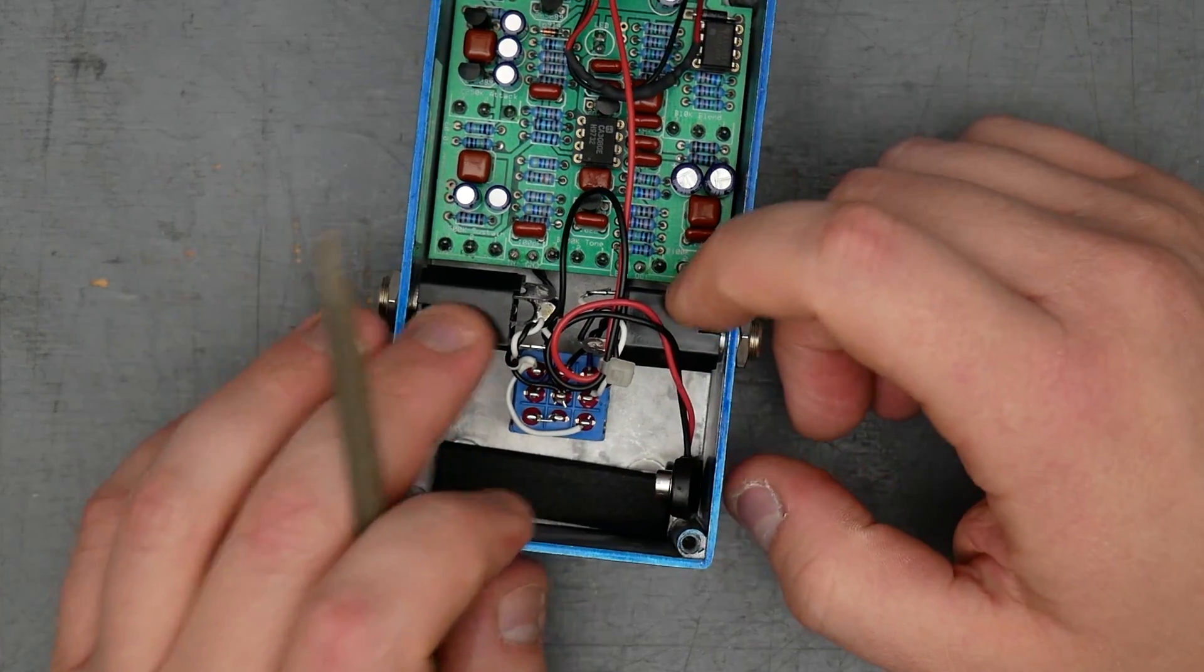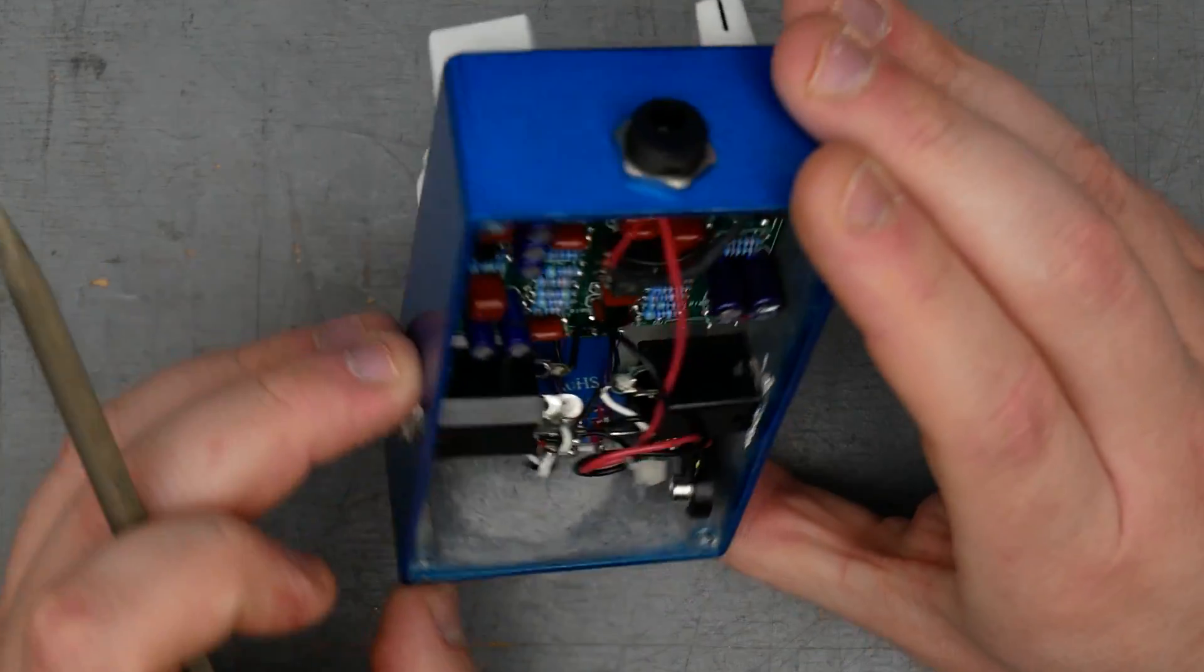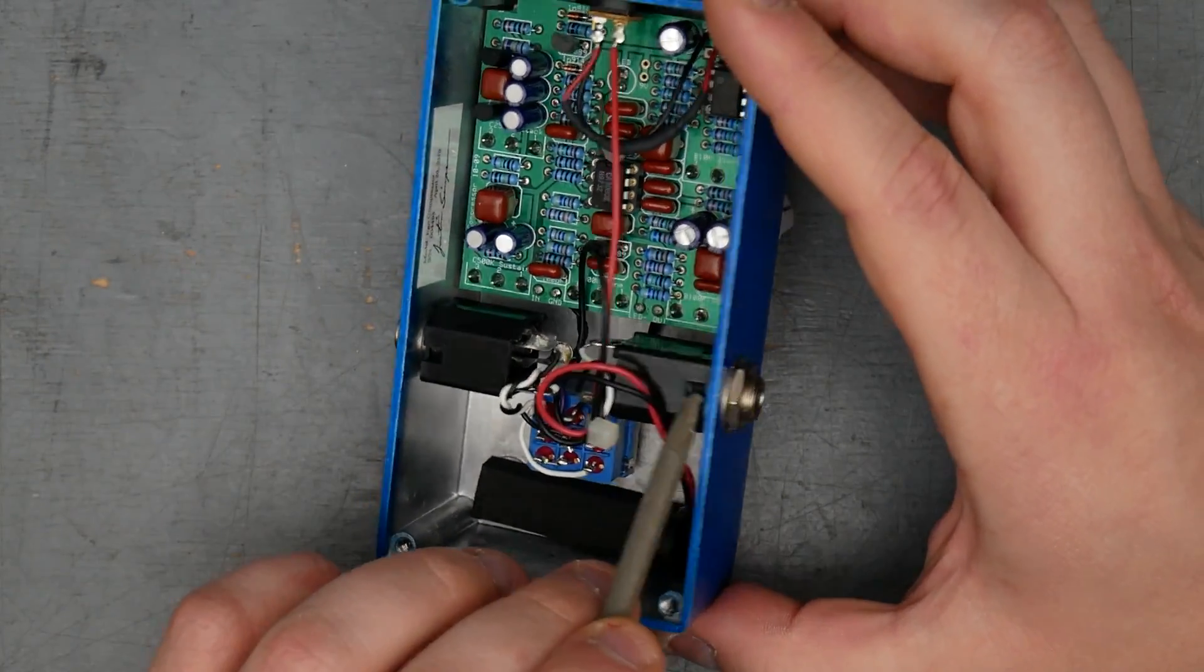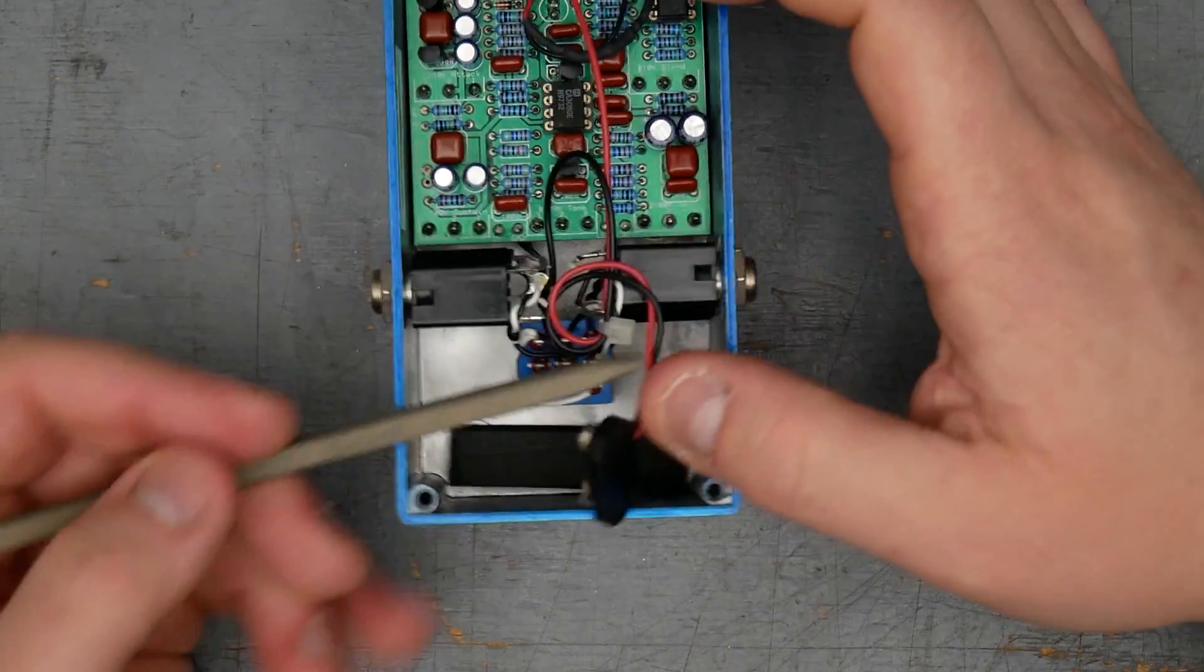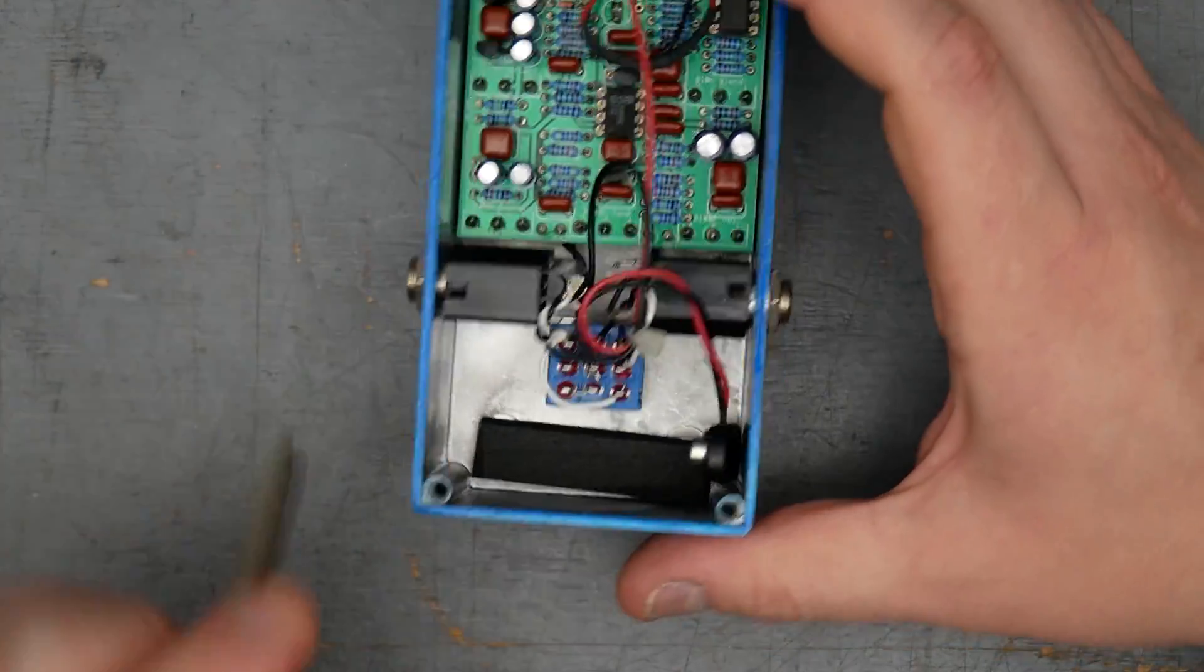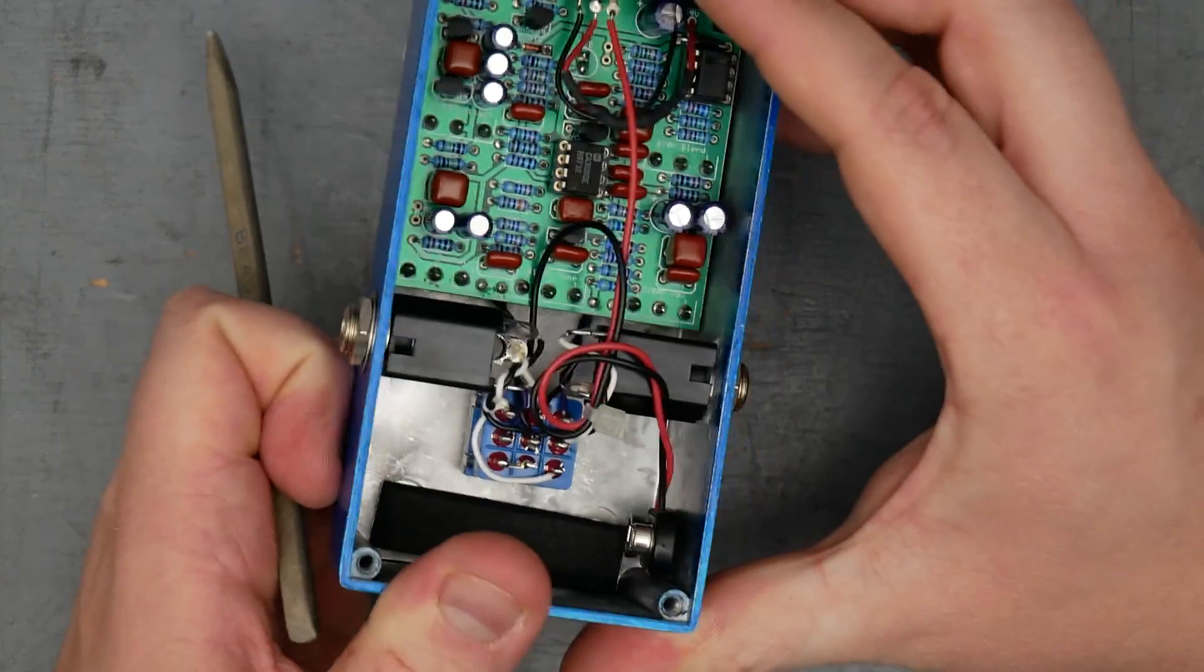Quarter inch jacks look like the Switchcraft 112BX style. The part number might be different if it's not stereo. This is a mono jack for the output, which is what you'd expect because that is not going to be turning on and off the battery snap, whereas the input jack is a stereo jack. But they both look like the Switchcraft plastic enclosed style. The foot switch is a standard blue three-pole double throw foot switch.